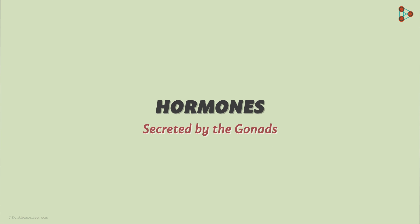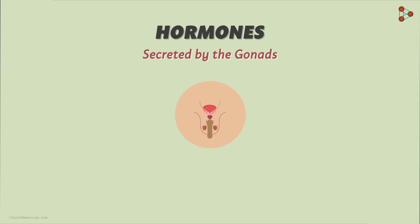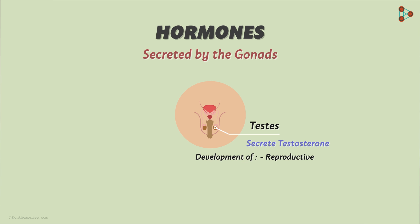These characters are all thanks to the hormones secreted by the gonads. Yes, hormones are the most important players in this process. The male gonads called testes secrete the male sex hormone called testosterone. This is responsible not only for the development of the reproductive tissues, but also for the development of the secondary sexual characters in males.